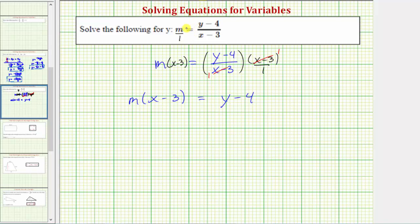Which means m times the quantity x minus three, which we have on the left, must equal one times the quantity y minus four, which is just the quantity y minus four, which we have here. So, cross multiplying gives the same result as multiplying both sides of the equation by the quantity x minus three.